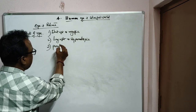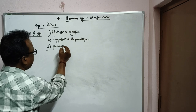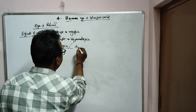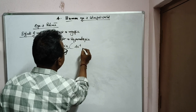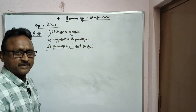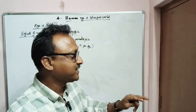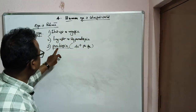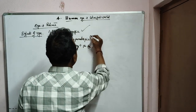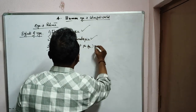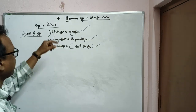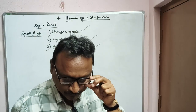The third defect is presbyopia, which occurs at 40 plus age. When any person is aging around 40 plus, this defect will appear. So let us study each one by one, starting with short sight or myopia.